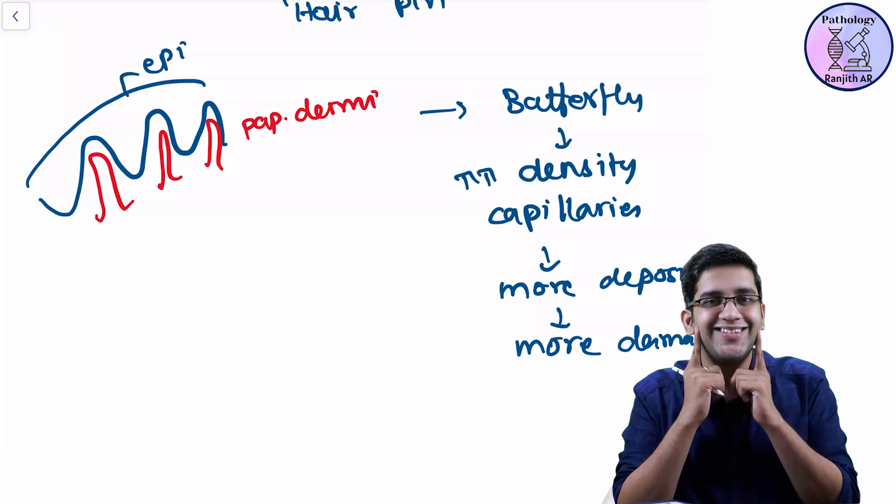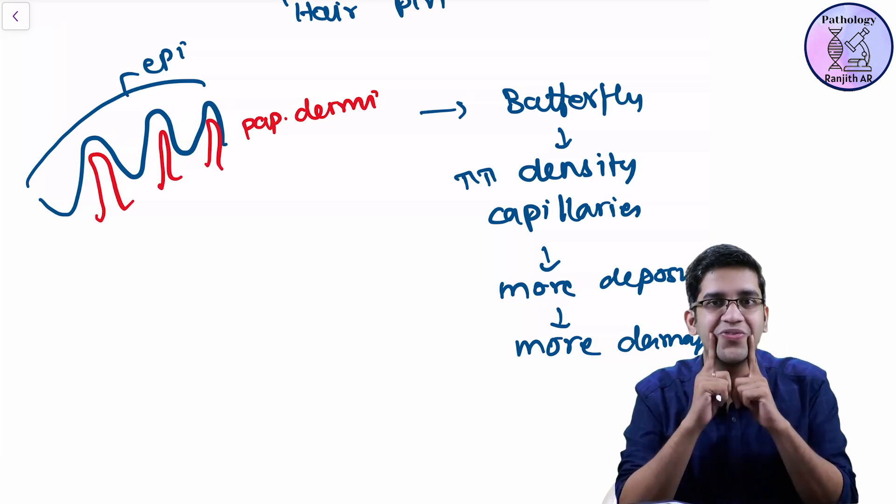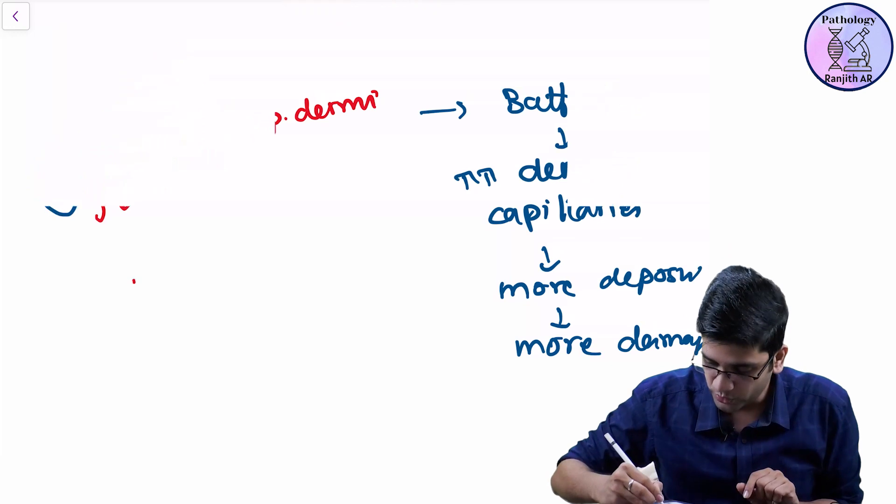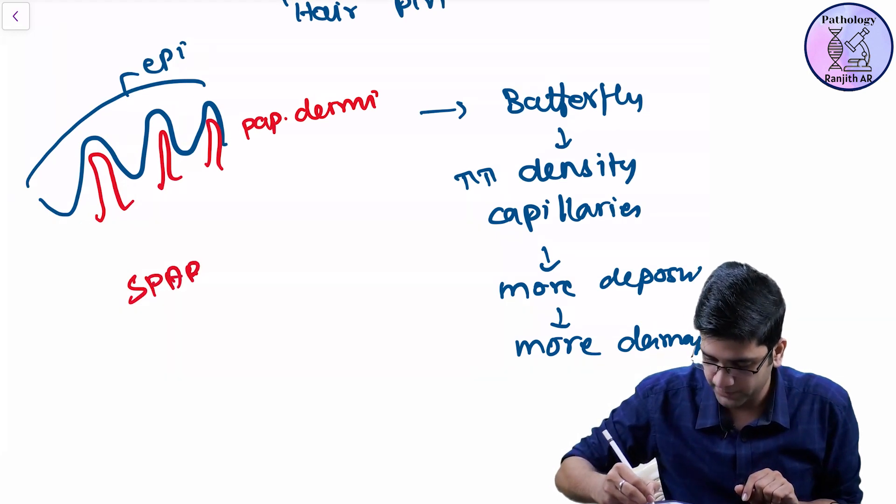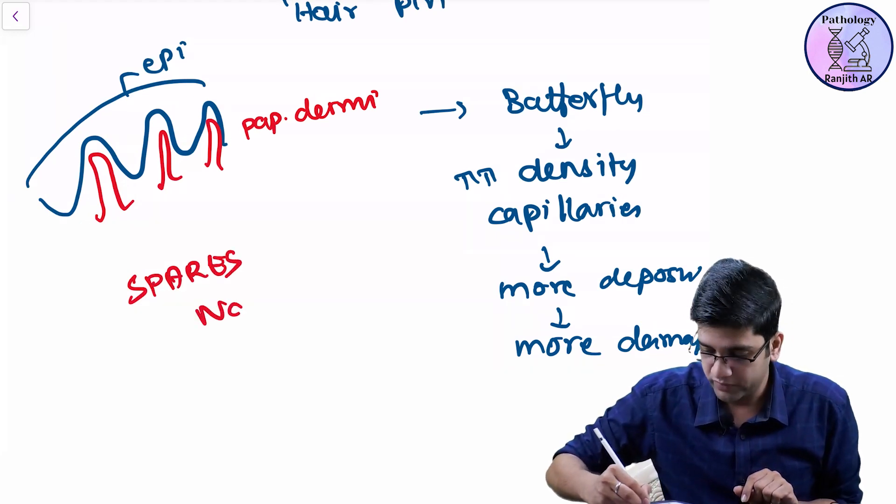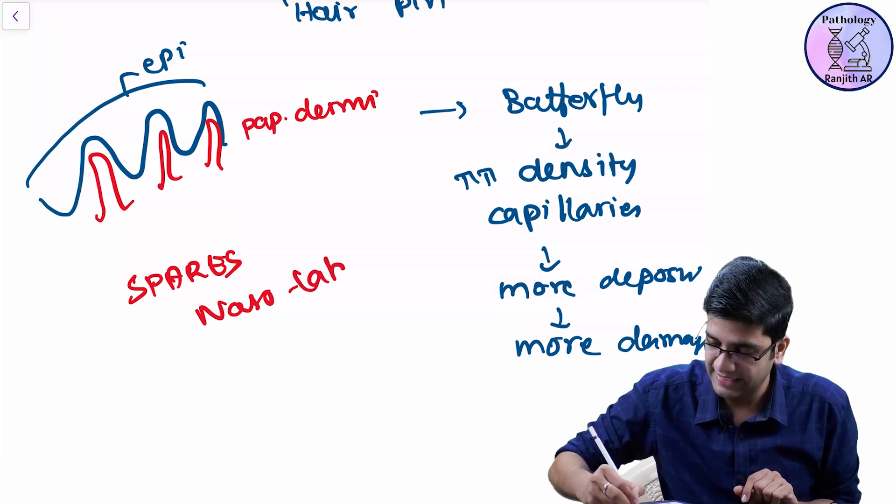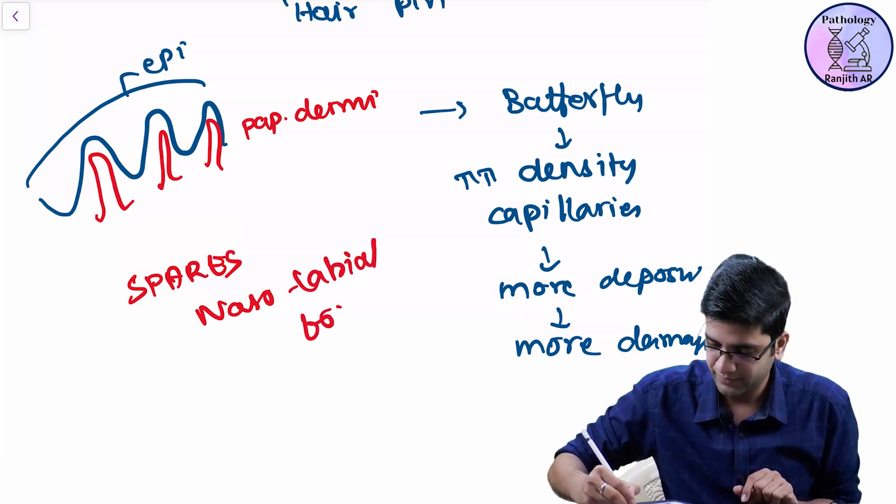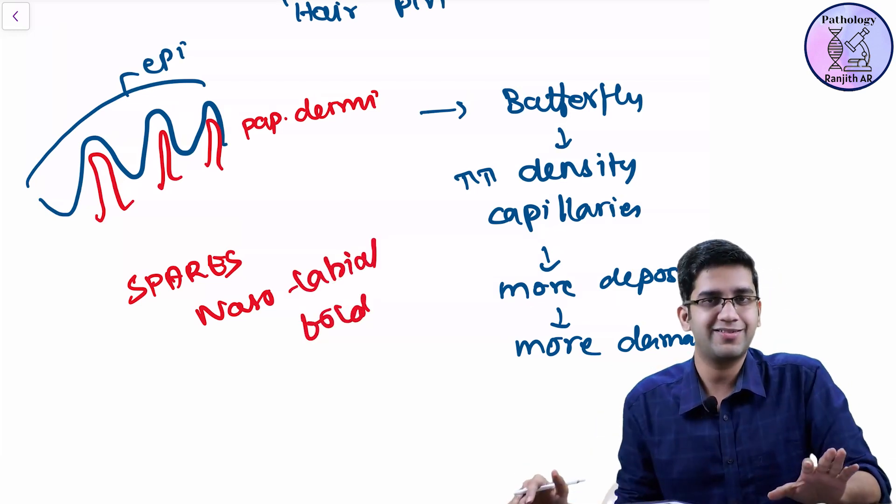Fat here. Fat here. Nasolabial fold doesn't have much fat, which spares nasolabial fold. May not be always, but this is how the classical explanation is. Everything falls in place.